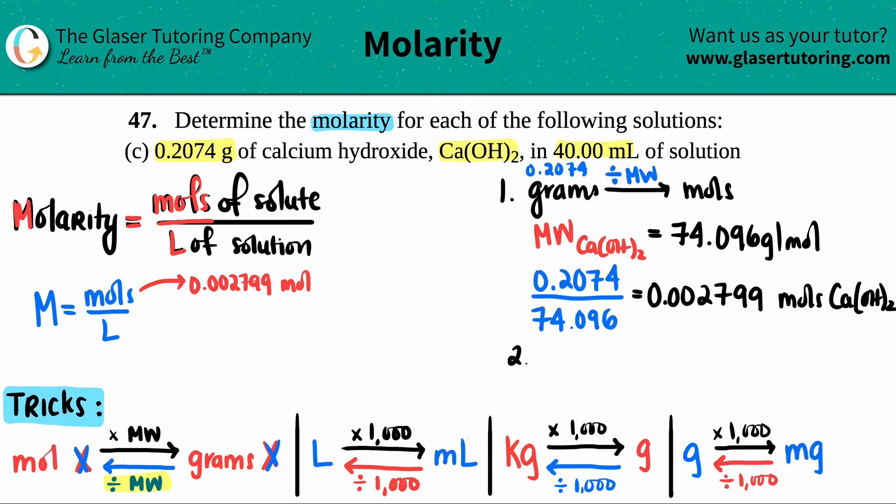Step two: they gave me 40 mL and I have to convert to liters. Here's the trick: if you're going from mL to liters, divide by a thousand, or move the decimal place left three times. This would be 0.04000 liters. Now I know the bottom number.